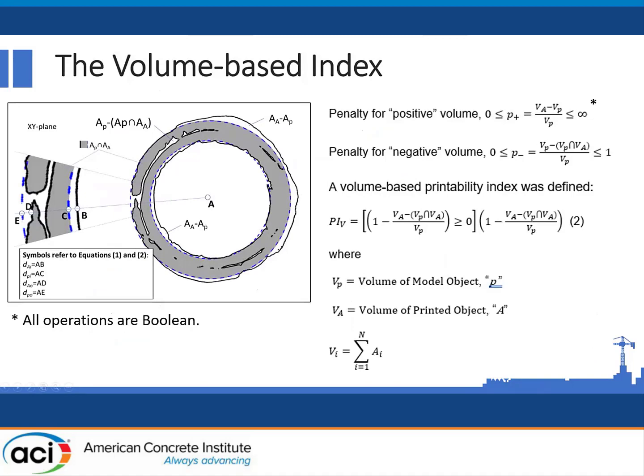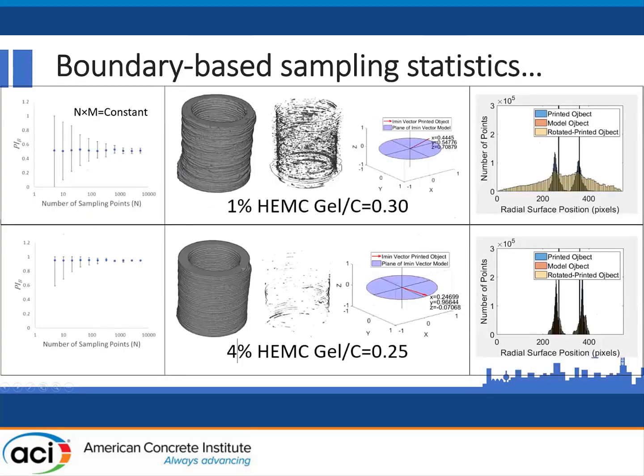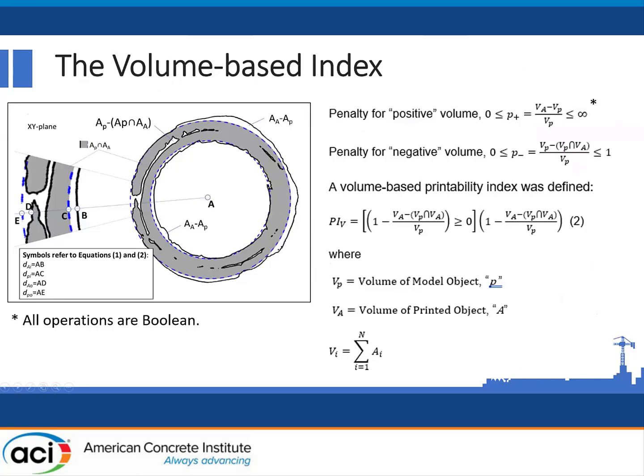If we calculate a volume-based index, instead of comparing points on the surface or deviations from surface points, we compare how well the printed structure overlaps with the structure we actually desired to print — the model object. We penalize for positive volume — volume that was printed outside of the structure — and negative volume, which is porosity where material was supposed to be printed but wasn't. We sum those two, subtract from one, and multiply by a Boolean operator that forces the volume-based fidelity to also vary between zero and one.